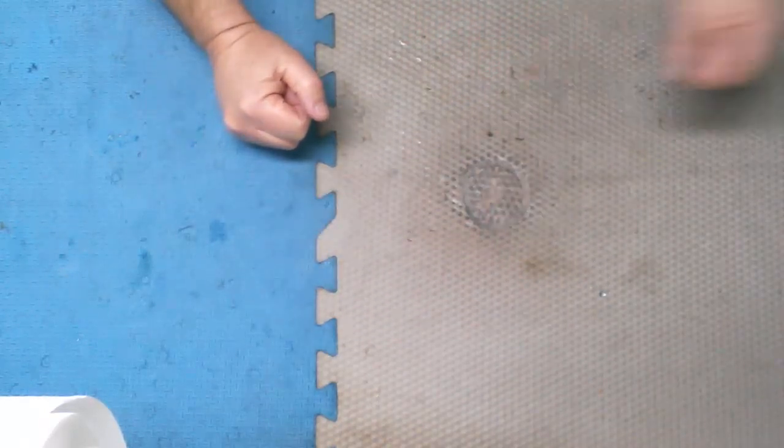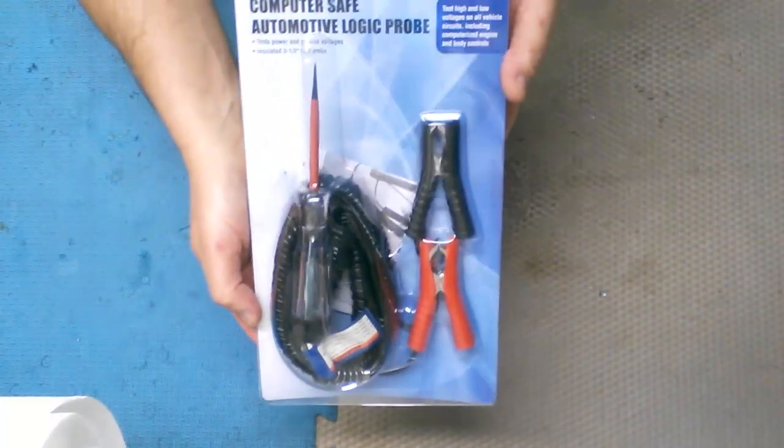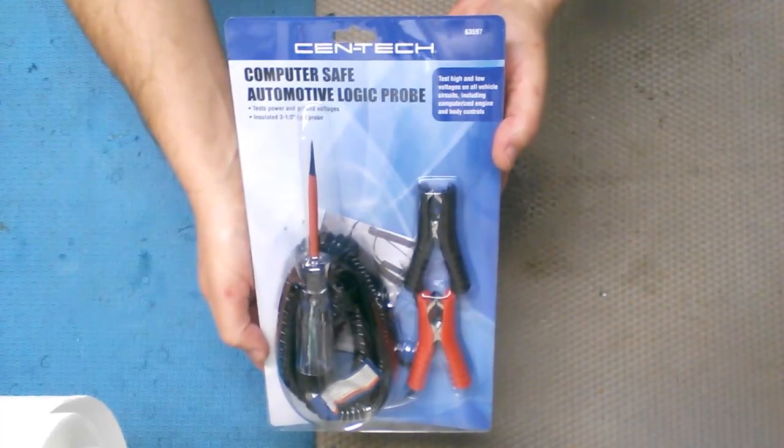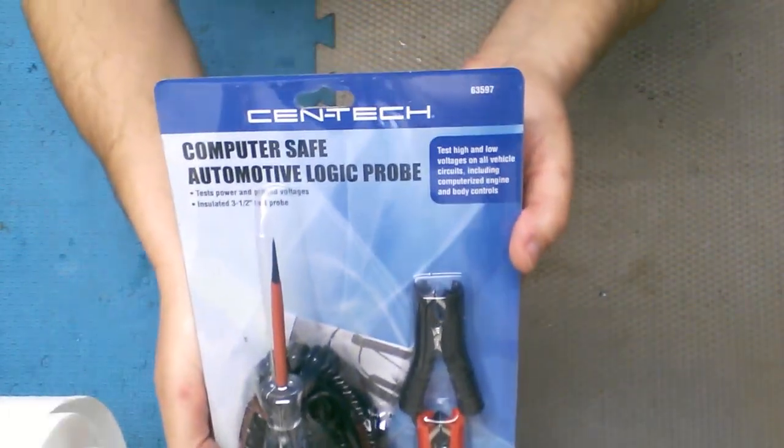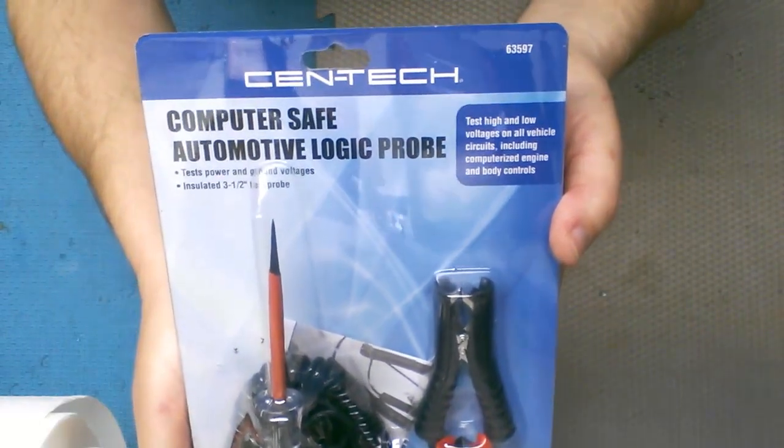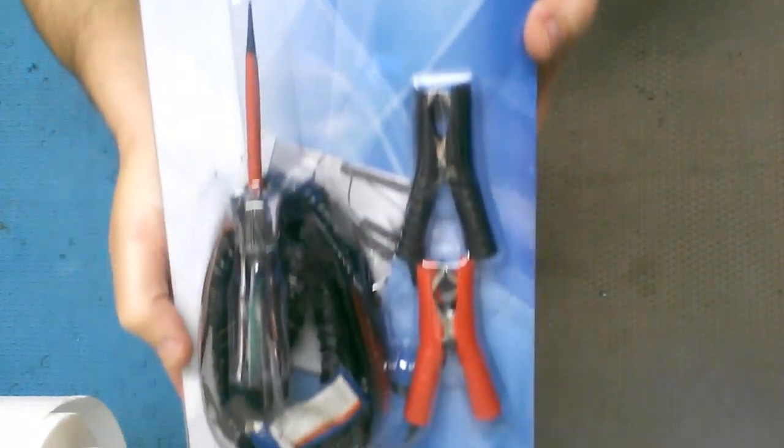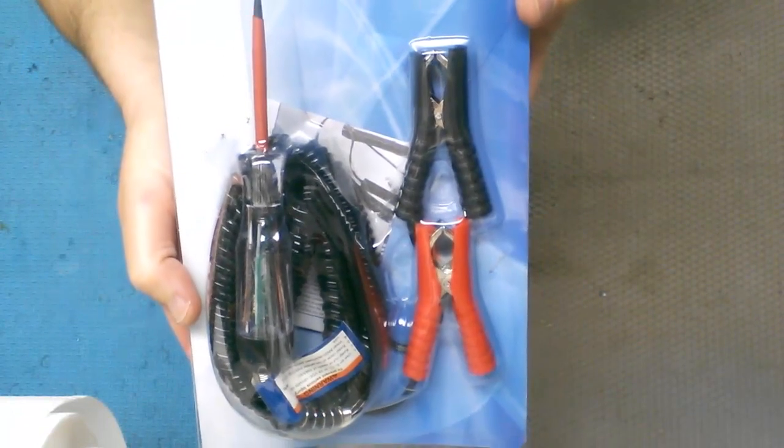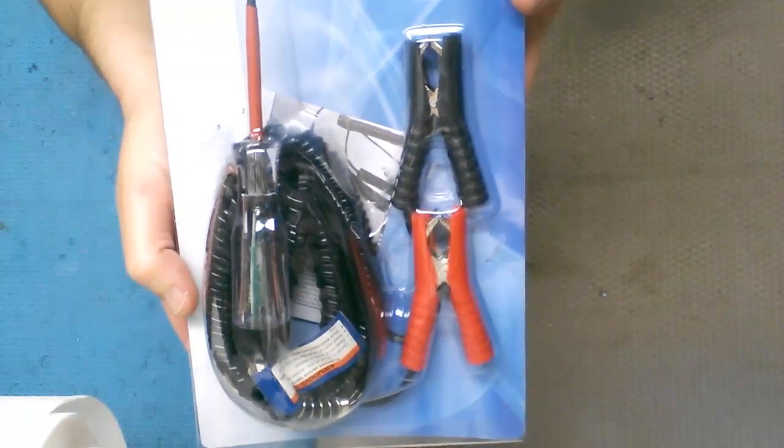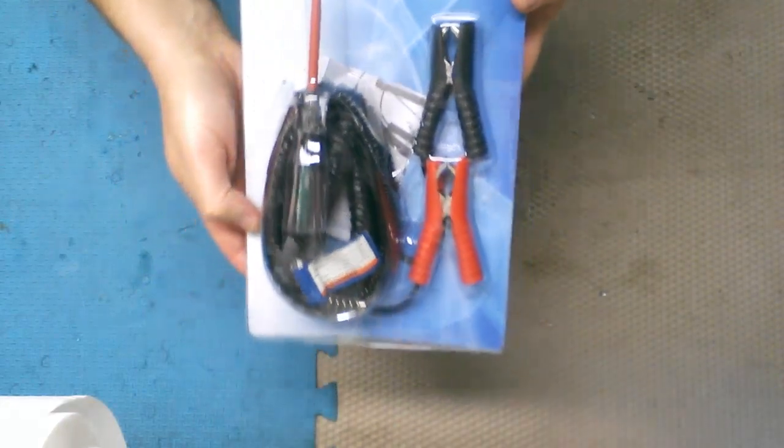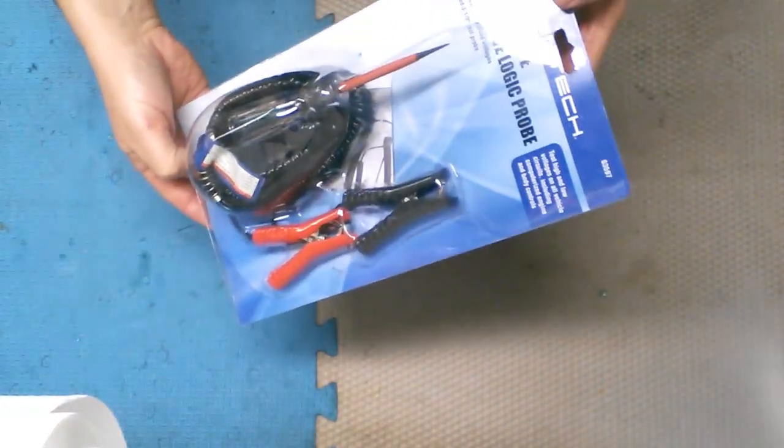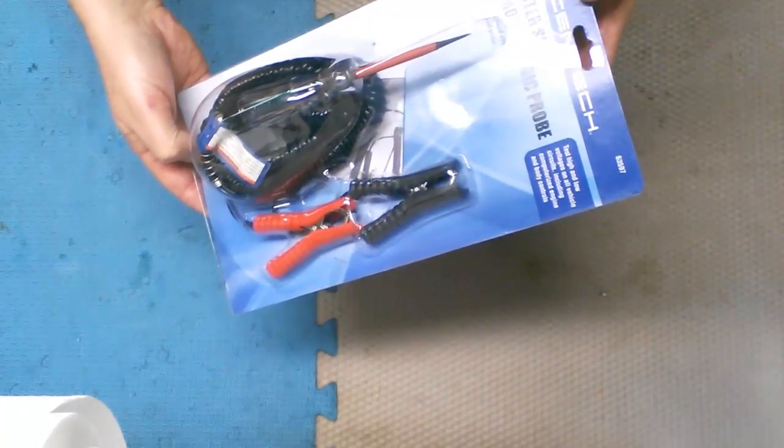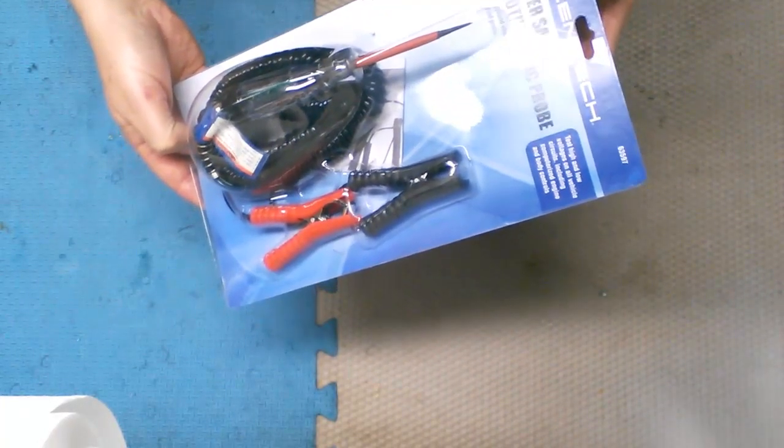We're doing an automotive tool review. What we have today is the Centec computer safe automotive logic probe. Let me get this up here so you can see it better. There you go, Centec automotive logic probe. It is basically a fancy test light if you really want to look at it that way. The Centec computer safe automotive logic probe, item number 63597.